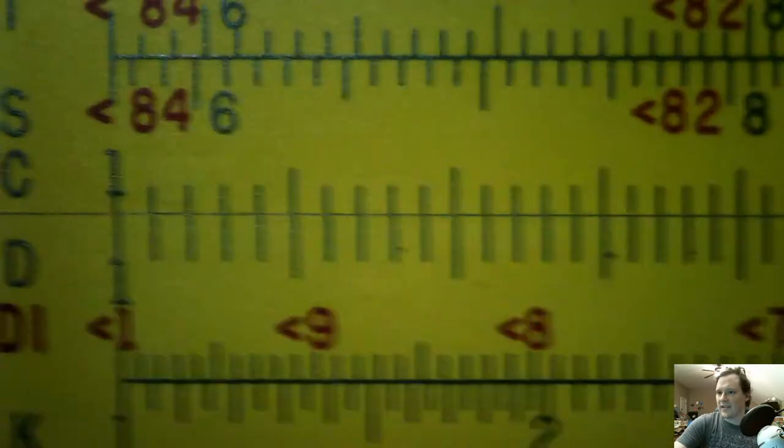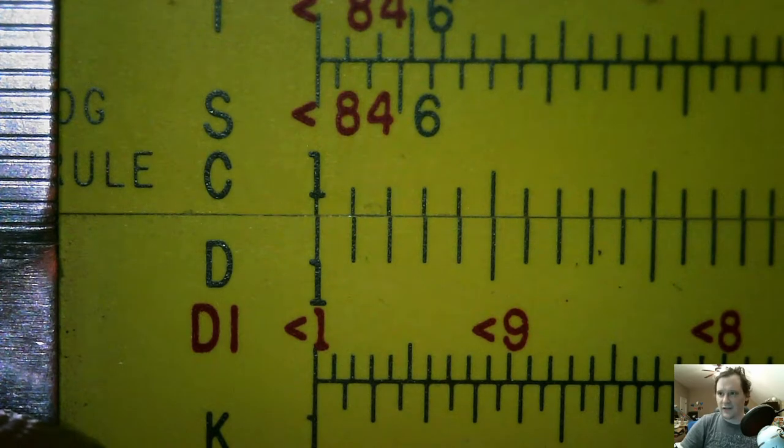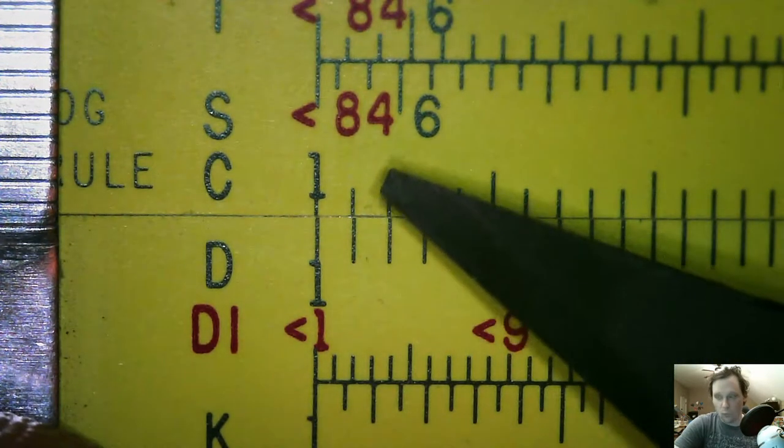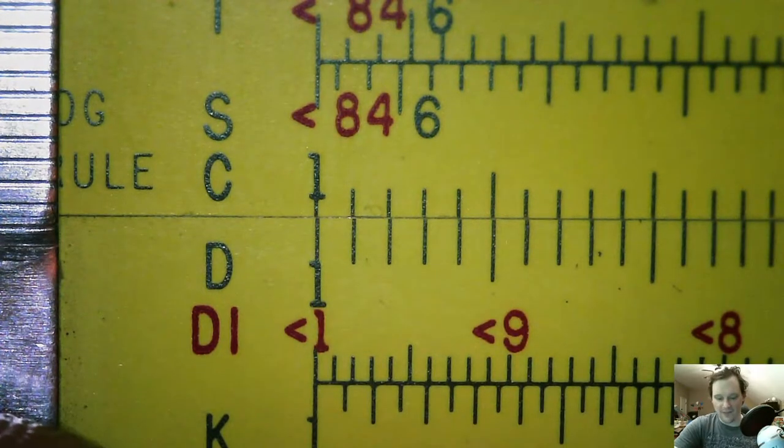Now in order to get a calculation of 1.5 times 3.5, what we need to do is we need to move 1 on the C scale to 1.5 on the D scale.